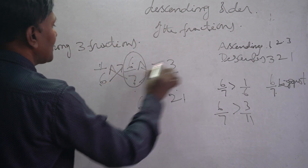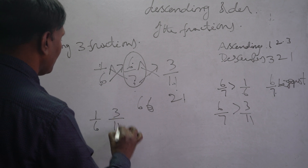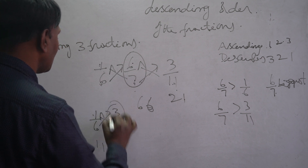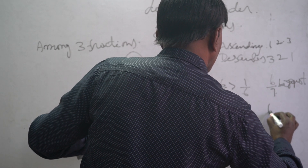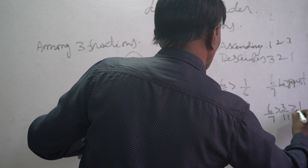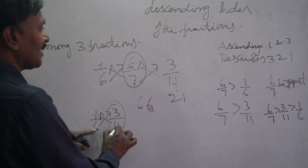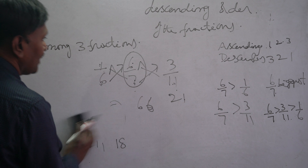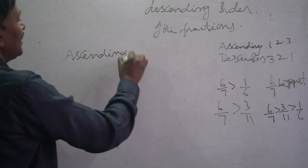Now we compare the remaining two fractions: 1/6 and 3/11. Cross multiplication: 11 times 1 is 11, and 6 times 3 is 18. So 3/11 is greater than 1/6. Therefore: 6/7 is greater than 3/11, which is greater than 1/6.